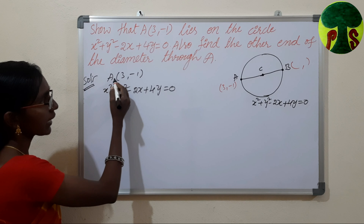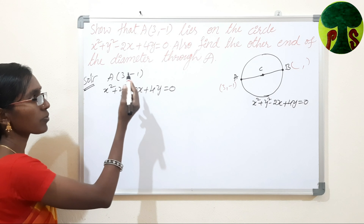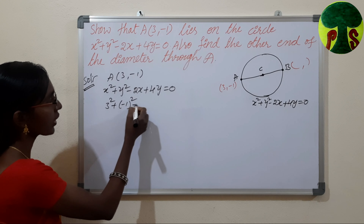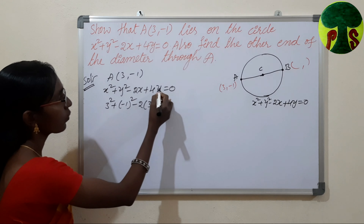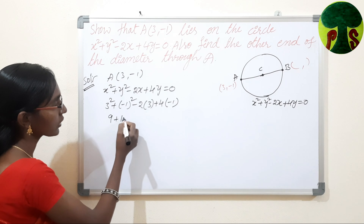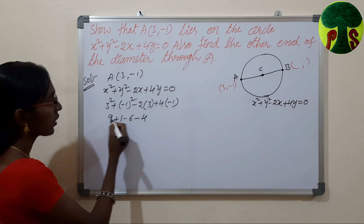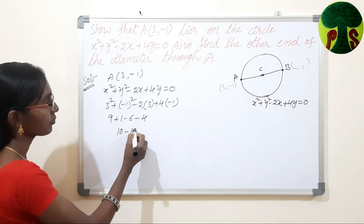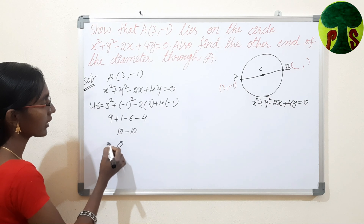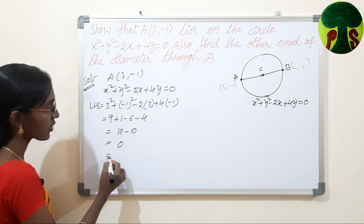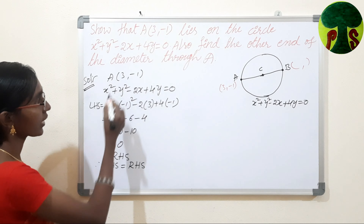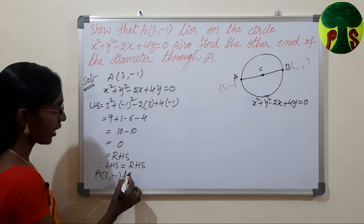To prove that A(3, minus 1) lies on the circle, substitute x equals 3 and y equals minus 1: 3 squared plus (minus 1) squared minus 2 times 3 plus 4 times (minus 1) equals 9 plus 1 minus 6 minus 4 equals 0. LHS equals 0 equals RHS. Therefore, the point A(3, minus 1) lies on the circle.